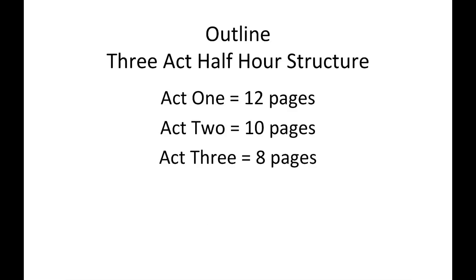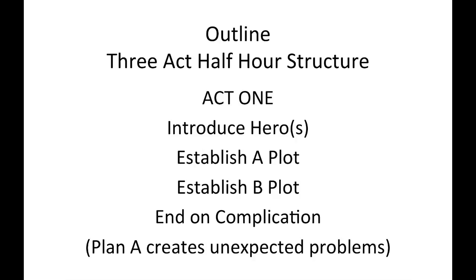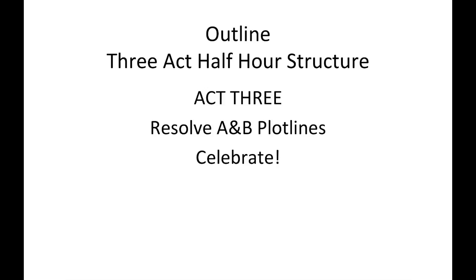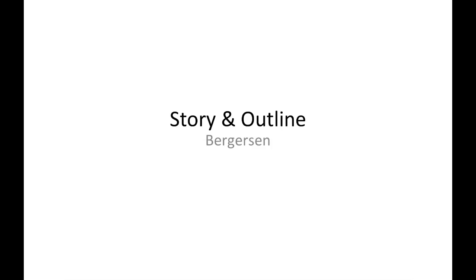In the three-act half-hour structure, act one can run a little long — 10 to 12 pages. Act two is about 10 pages, and act three is a little shorter because you're buttoning everything up. In act one, introduce your heroes, establish your A-plot and B-plot, and end on a complication. In act two, continue the complications and end on an A-plot OSM and a B-plot Oh Shit Moment. In act three, resolve your A and B plot lines and celebrate the story.